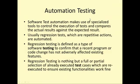Today we are going to study two types of testing: automation testing and manual testing. Automation testing is when the developer takes the help of automated testing tools for software testing. Automation testing tools control the execution of tests and compare the actual results against the expected results.